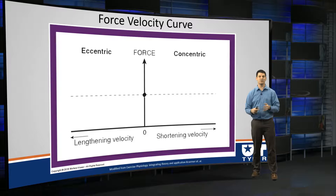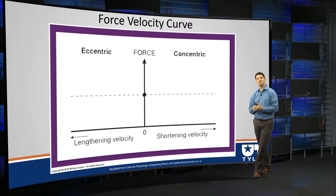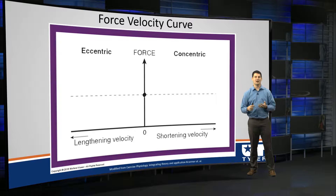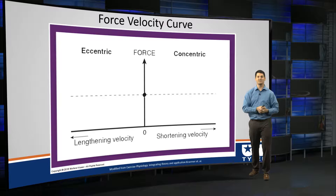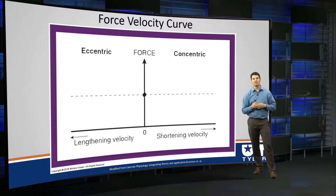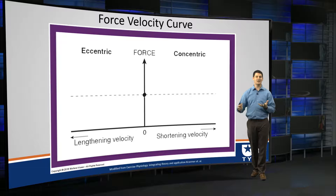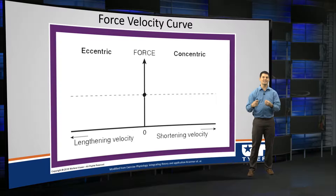Let's walk through what is now a very classical exercise physiology graph — the force-velocity curve. Another way to think about it is the velocity at which a contraction happens: how fast you can complete a movement based on the amount of force that you have to generate. You can visually think about how you do this.